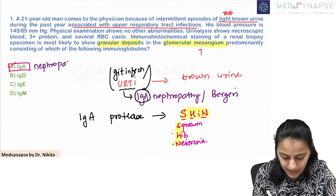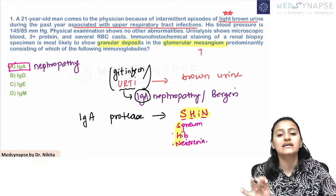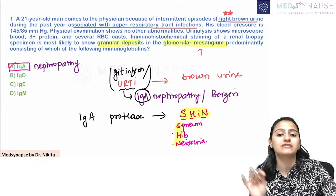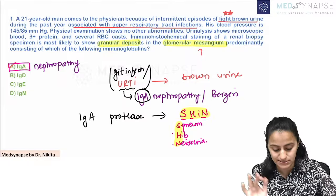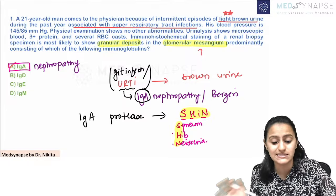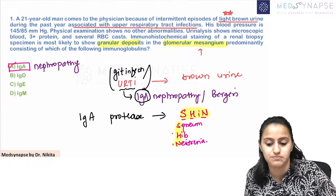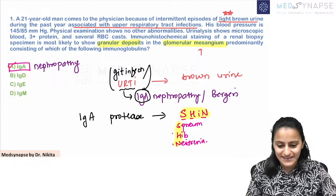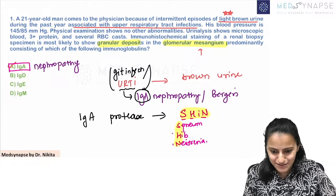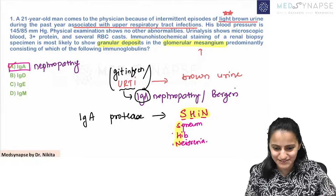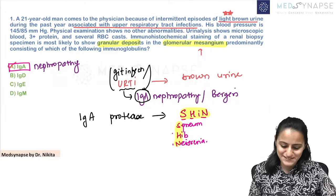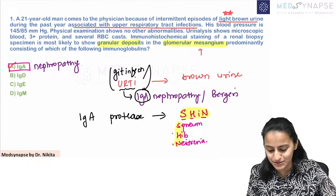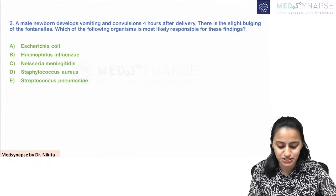So remember: this is IgA nephropathy — IgA is related to your respiratory and GIT mucosa, this is Berger's disease, IgA deposits. Very good everyone — let's go on to the next question.